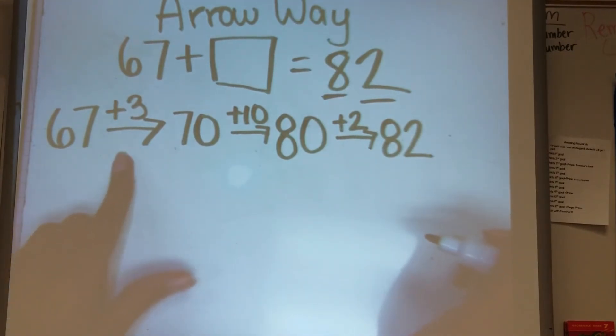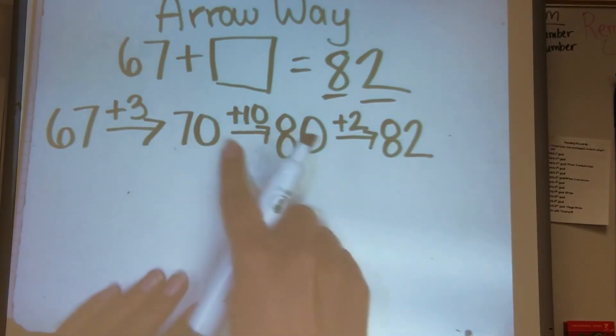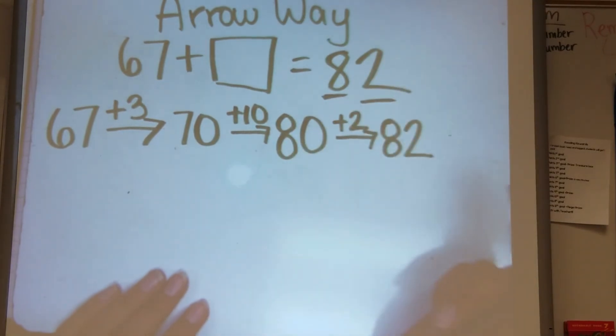What we need to do now is we started at 67 and ended at 82. We need to figure out how many numbers we had to add to make 82.